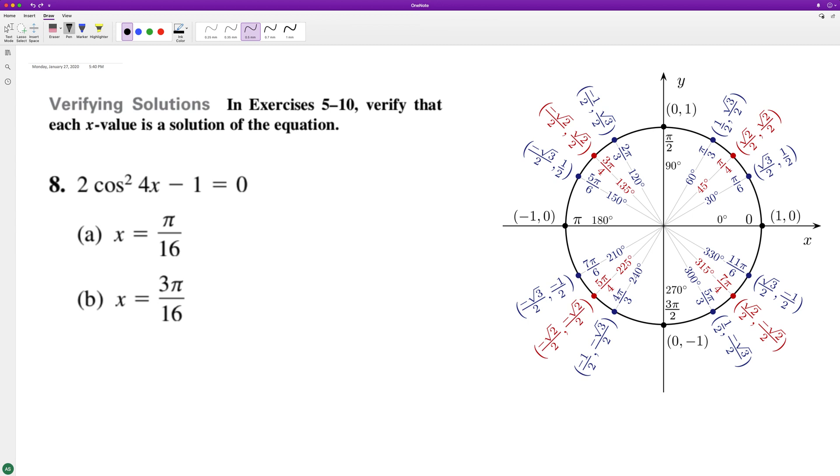Since we're using cosine, we're using the x component. So it's actually equal to 2 times the cosine of π/4 squared, which in this instance is √2/2 squared.